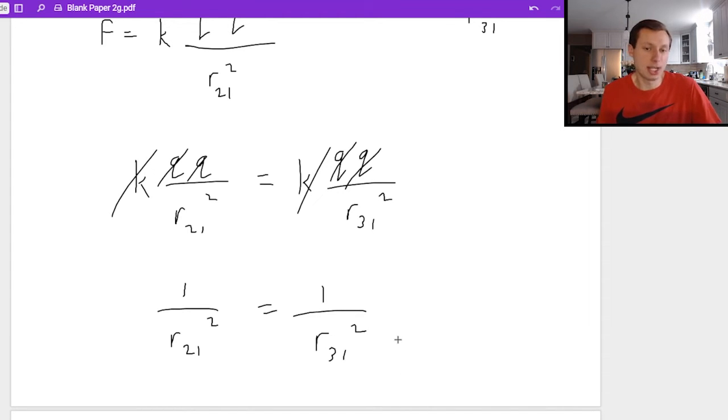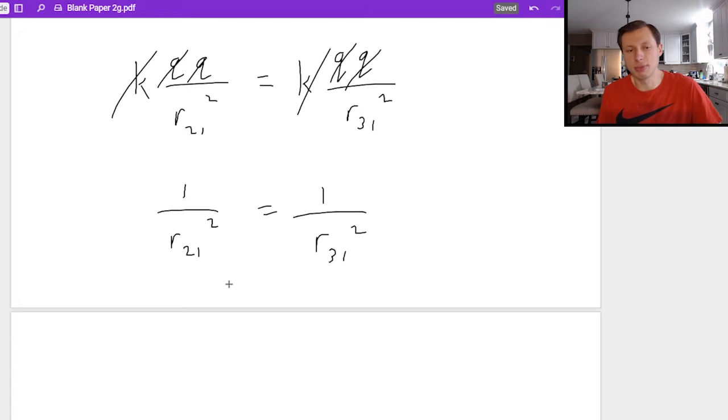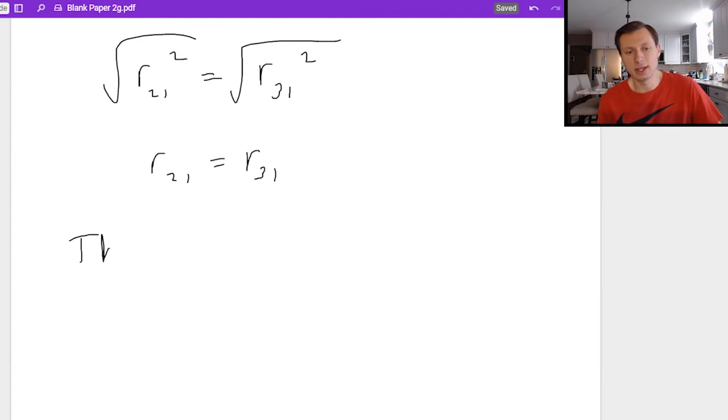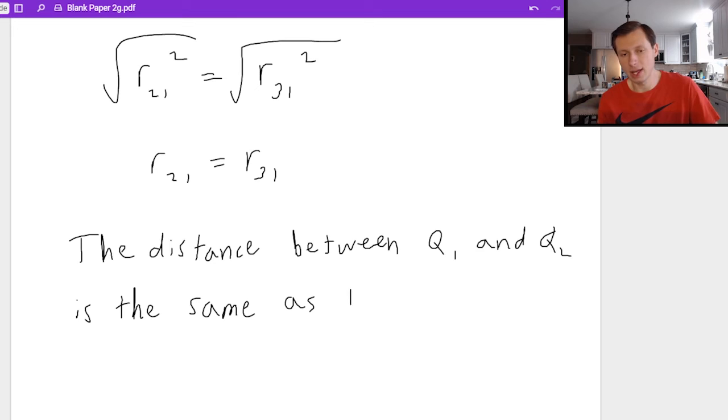And now it's just an algebra problem. So first, I would take the reciprocal of both sides. That means r21 squared equals r31 squared, take the square root, and you get that radius two one is equal to radius three one. What this means in English is that the distance between q one and q two is the same as the distance between q one and q three.